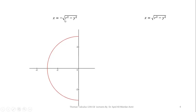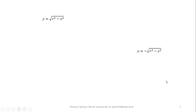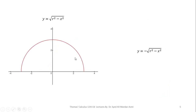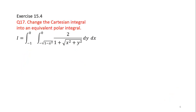x = −√(R² − y²) is a semicircle in the left half-plane, or in the second and third quadrant. x = √(R² − y²) is a semicircle in the right half-plane, or in the first and fourth quadrant. y = √(R² − x²) is a semicircle in the upper half-plane, or in the first and second quadrant. y = −√(R² − x²) is a semicircle in the lower half-plane, or in the third and fourth quadrant.